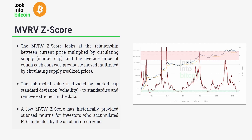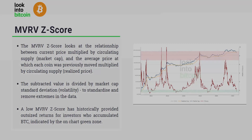Historically, a low MVRVZ score has provided outsized returns for investors who accumulated BTC. On the flip side, strategic investors who began locking in some profits as we far extended — potentially into the red zone — found this a great time to lock in profits and potentially cut some of their positions.